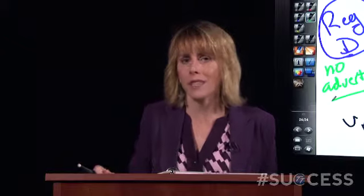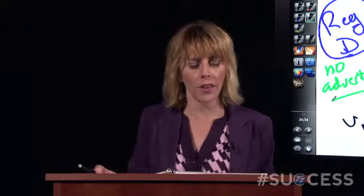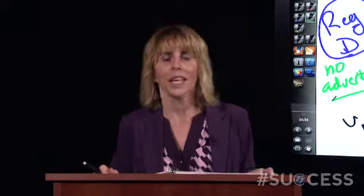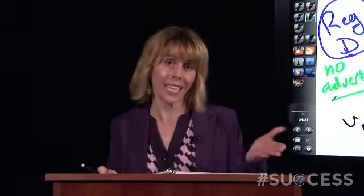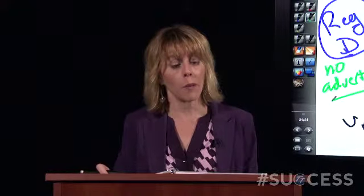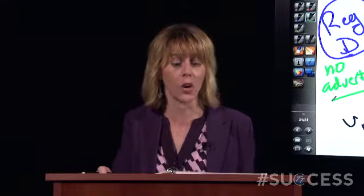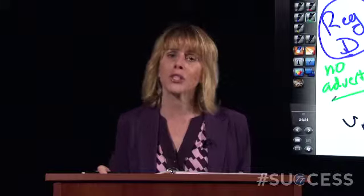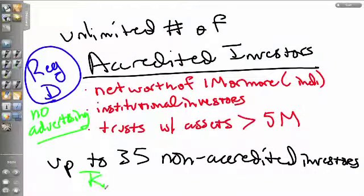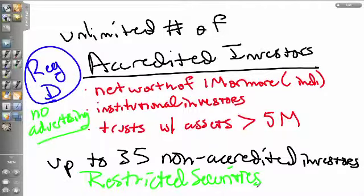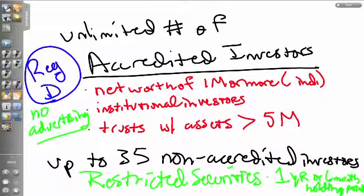The company may sell these securities to an unlimited number of accredited investors and up to 35 other purchasers. Rule 506 uses the term 'sophisticated purchasers' — someone who doesn't meet the accredited investor standard but has some understanding of how the markets work. Companies must still give out disclosure information similar to a prospectus, though it is not a prospectus because the shares are not registered. The company must be available to answer questions from prospective purchasers. Securities purchased through a private placement are called restricted securities — they are not freely saleable and carry a one-year or six-month holding period under Rule 144.